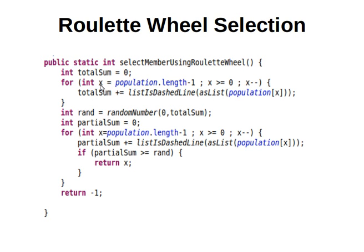We sum the total fitnesses of all the members of the population, and then we generate a random number between zero and that sum. Then we compute the partial sum by looping again, computing the sum at every iteration, and comparing the partial sum that we have against that random number.